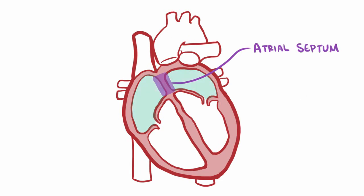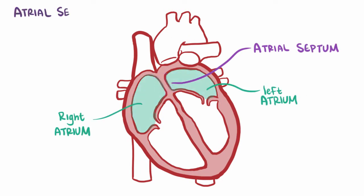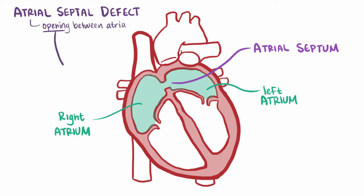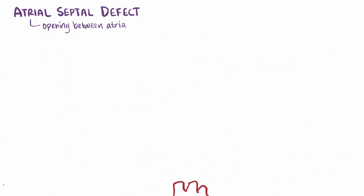The atrial septum separates the right and left atrium of the heart, and an atrial septal defect describes where there's some opening in a baby's heart between these two upper chambers. But how does this opening form? Let's first run through how the septum develops in the first place.